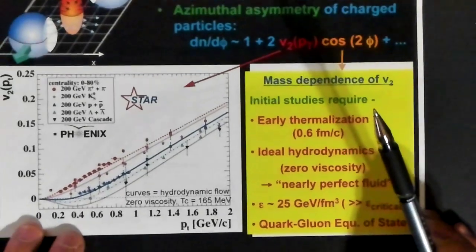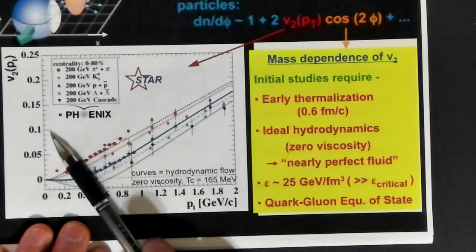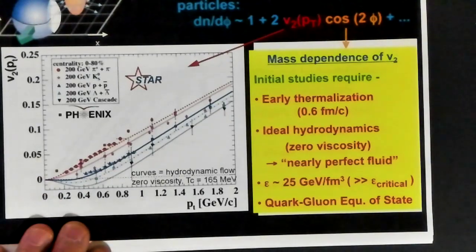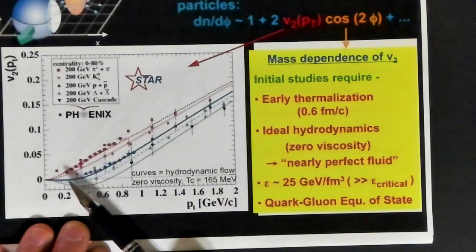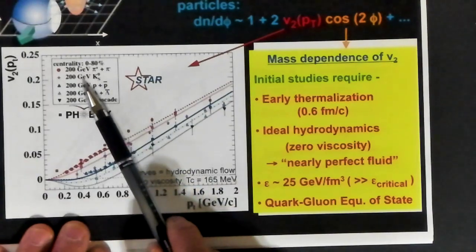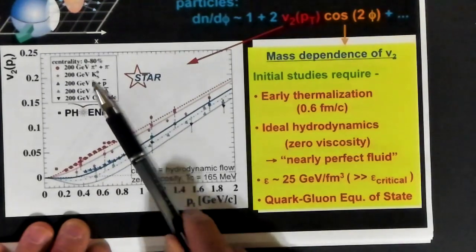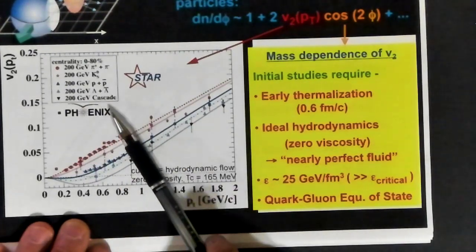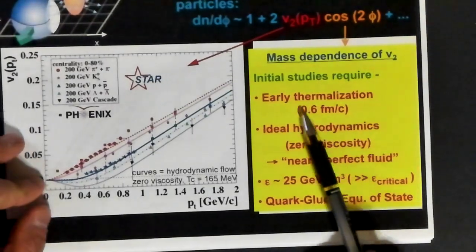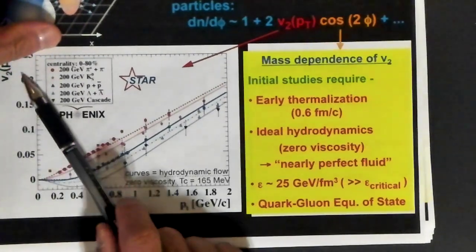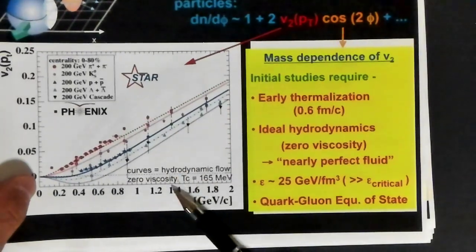We can take a look at what the data shows here for various different data at RHIC, at the Relativistic Heavy Ion Collider. You see data for pi plus, pi minus, those are these dots here at 200 GeV. You see data for K0 short, proton, anti-proton, anti-lambda, and you see data for cascades. There's some mass dependence going on. We see something that's consistent with elliptic flow, the fact that we see this V2, a non-zero V2.